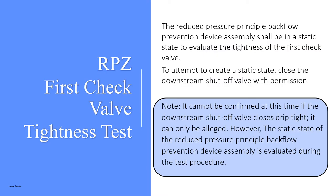The RPZ first check valve tightness test. The reduced pressure principal backflow prevention device assembly shall be in a static state to evaluate the tightness of the first check valve. To attempt to create a static state, close the downstream shutoff valve with permission. Note: it cannot be confirmed at this time if the downstream shutoff valve closes drip tight — it only can be alleged. However, the static state of the assembly is evaluated during the test procedure.